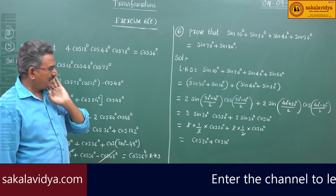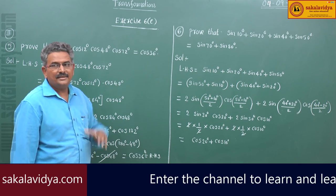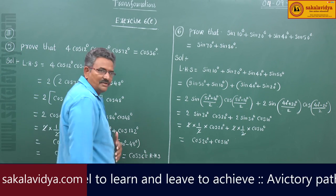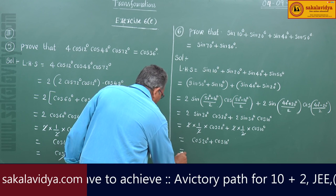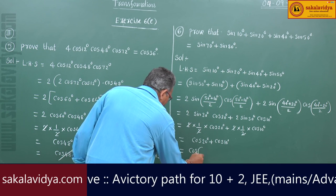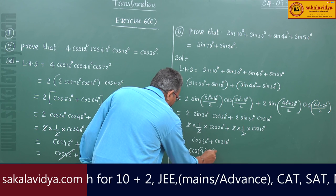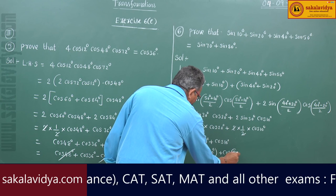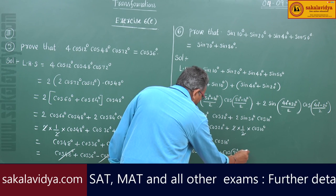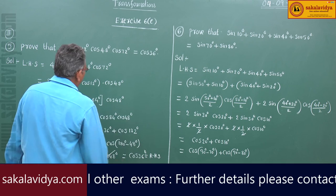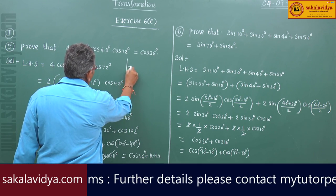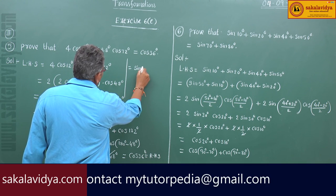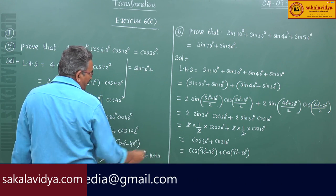Now our answer must be in terms of sine. So let us change each term in terms of sine. This we can write cos of (90 minus 70) plus cos of (90 minus 80). Using cos(90 minus theta) equals sin(theta), this equals sin70 plus sin80 degrees, which equals RHS.